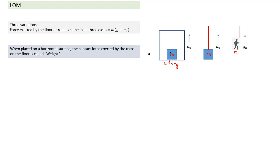Apparent weight can be easily arrived at from simple application of Newton's laws of motion. Draw the free body diagram: there is normal reaction N upward and mg downward. Taking the direction of acceleration a₀ as positive, the equation gives N minus mg equals m·a₀, which gives normal reaction N equal to m(g + a₀). So this is something very commonly used — keep this in mind.